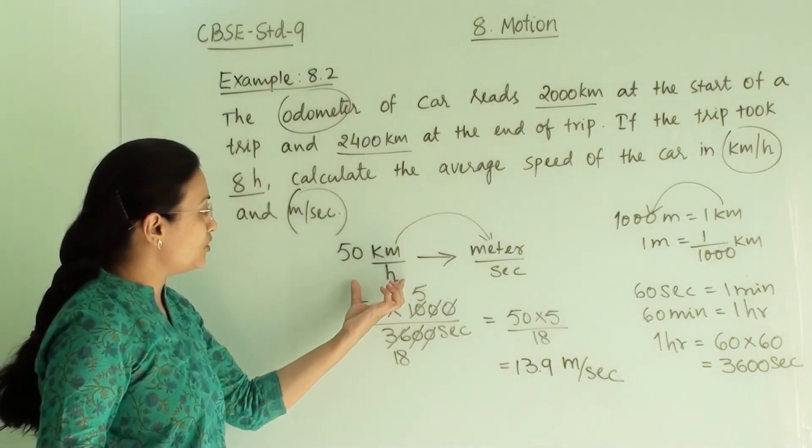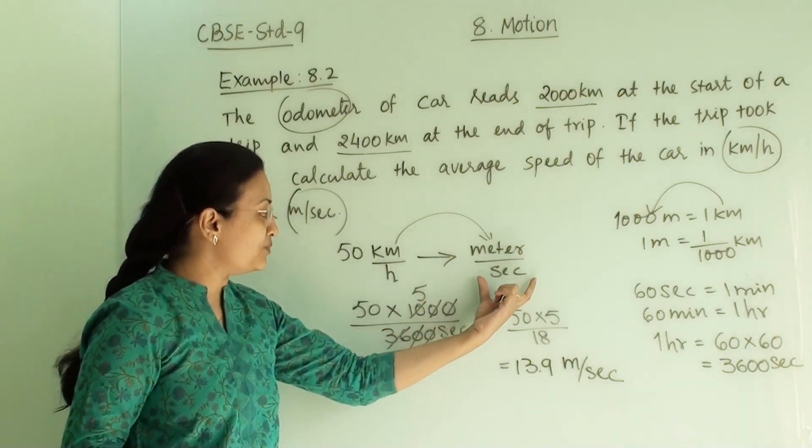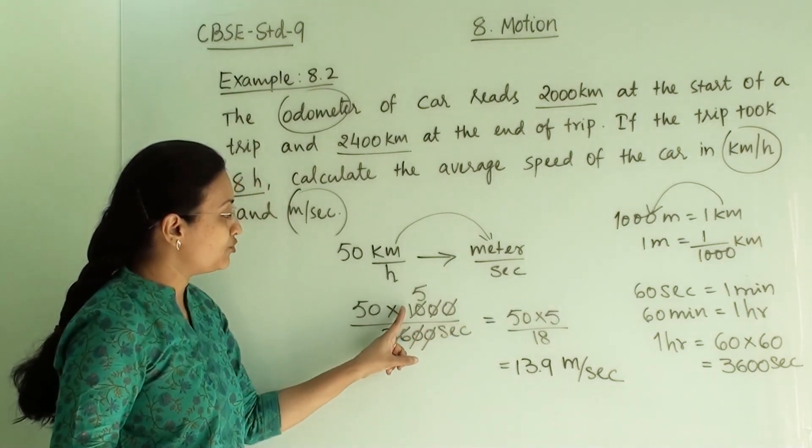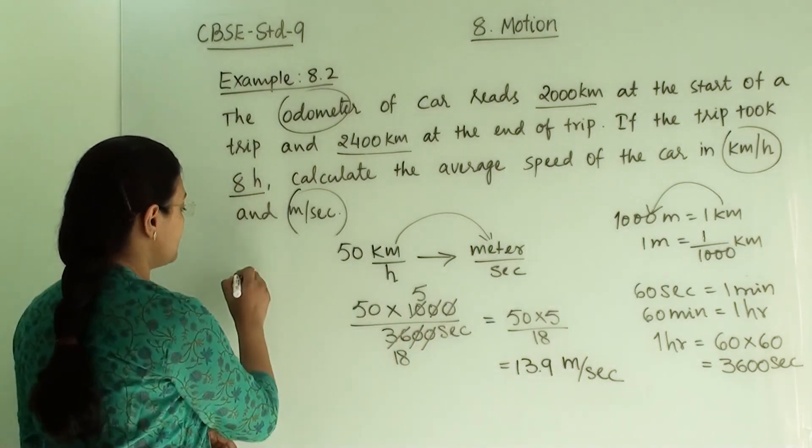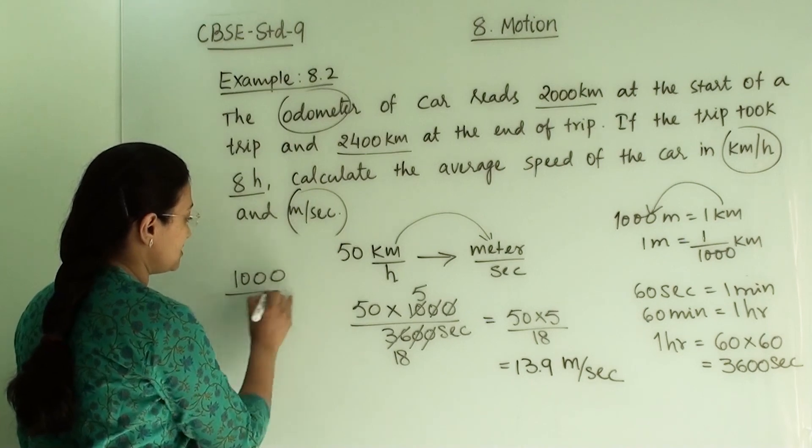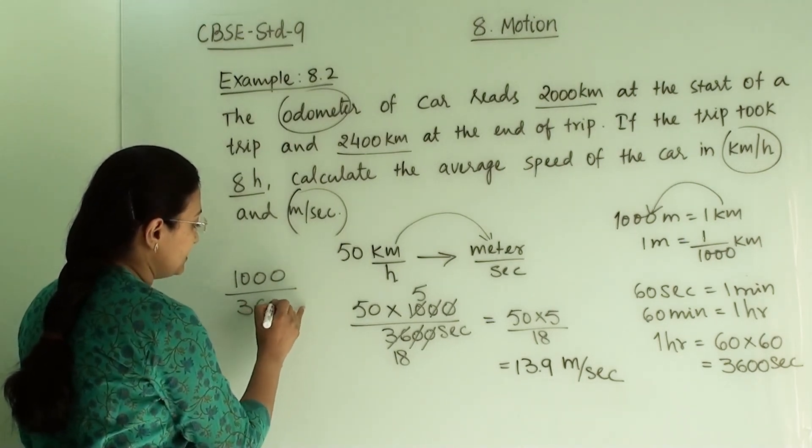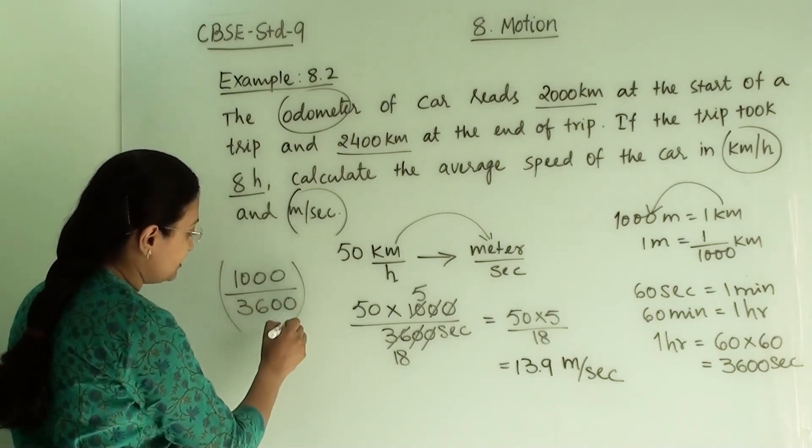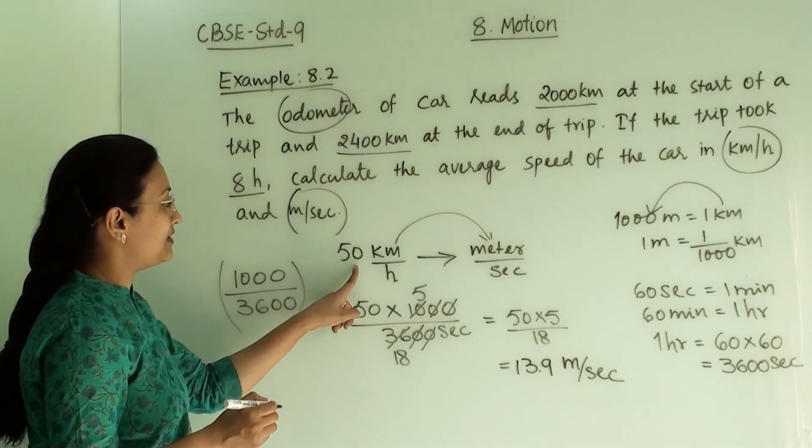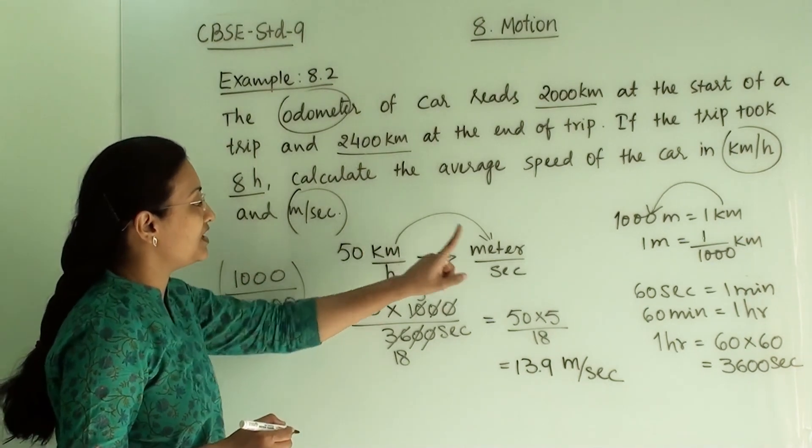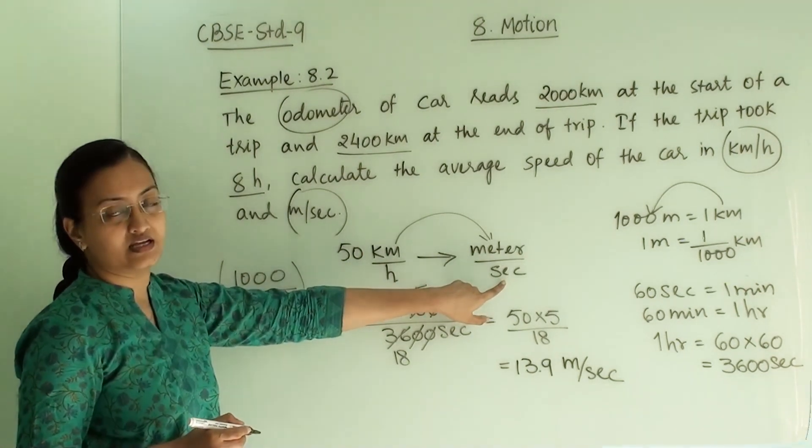When converting from kilometer per hour to meter per second, we have to multiply with this factor: 1000 divided by 3600. With this factor we multiply the answer to convert it into meter per second.